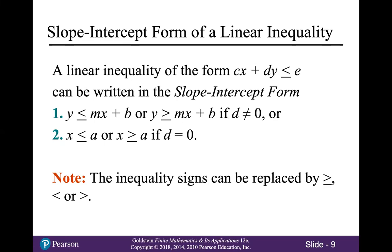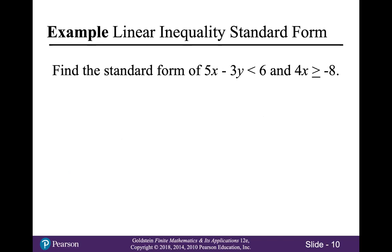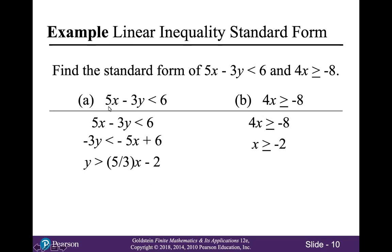In this example, we'll find the standard forms of 5x minus 3y is less than 6, and also 4x is greater than or equal to negative 8. For the first inequality, we start by subtracting 5x from both sides, then divide all three terms by negative 3. Because that number is negative, that reverses the inequality sign, leaving us with y is greater than 5/3 x minus 2. For letter B, divide both sides by 4. Because 4 is positive, the inequality sign stays the same. In standard form, this inequality is x is greater than or equal to negative 2.